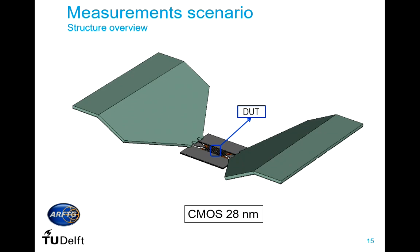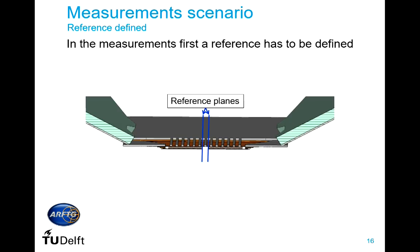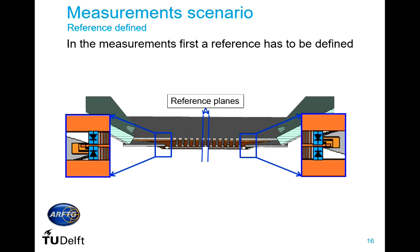Let's go to the measurement scenario. First, an overview: we have the probes, the structure, and for this session we use an extraction made in CMOS 28 nanometer technology, with the device in the middle of the structure. Looking at a cross-section, we have the probe, the pads, the transition, then the line to reach the reference plane, and underneath the transition we have the ESD protection.